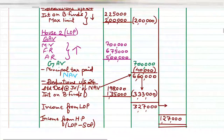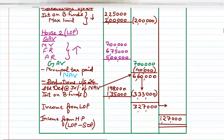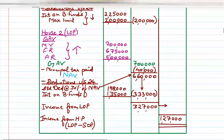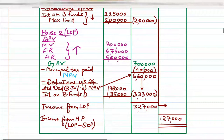Next step: less Municipal Taxes Paid. For house 2, municipal taxes paid is ₹40,000. So ₹7,00,000 minus ₹40,000 gives us NAV (Net Annual Value) = ₹6,60,000. To summarize: GAV is the highest of municipal value, fair rent, and actual rent; minus municipal taxes paid gives NAV.